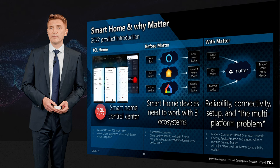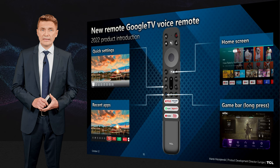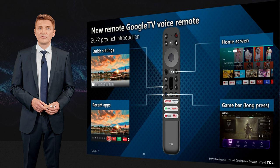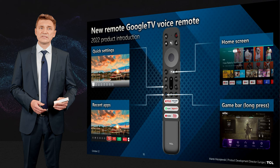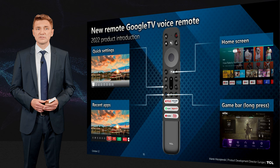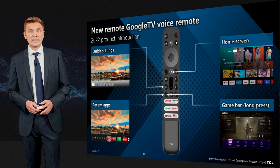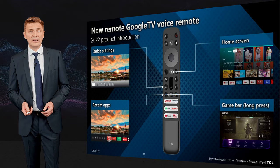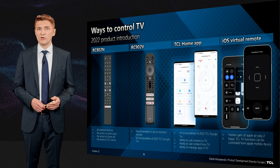Soon all our products will be compatible with Matter. Another area is the new remote control you get this year. It comes with voice streaming so you can talk to it, and in many cases you can also use the TV as a hands-free device. New functionalities include quick settings, which have been redesigned, and recent apps so you can quickly find your most-used apps. On TVs with a game bar, a long press brings up the game bar on screen.